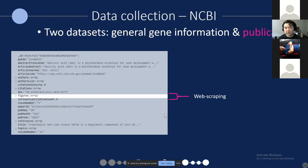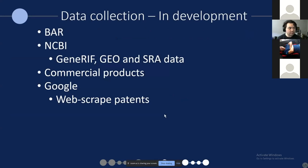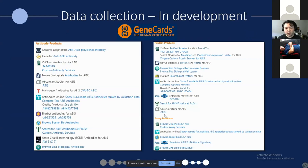This is what we currently have to answer questions for the NLP and Gaia. We plan to retrieve more processing data from the BAR, and we plan to retrieve gene-derived GEO and SRA data — those two are what we're currently working on right now. If time permits, we also want to add commercial products.